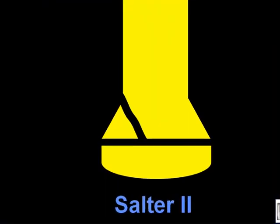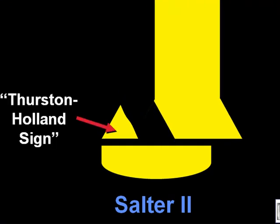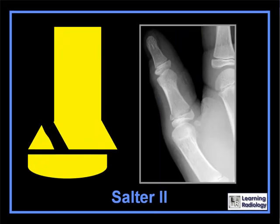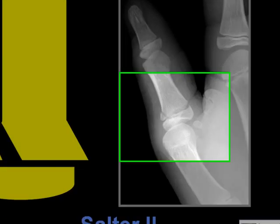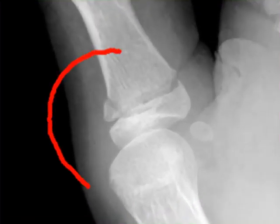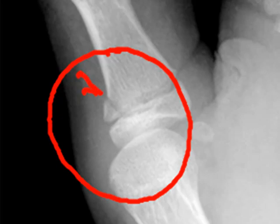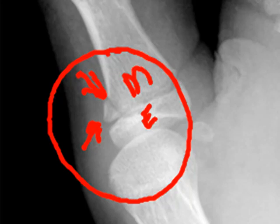A Salter-Harris 2 fracture involves usually a corner of the metaphysis. Very frequently, that corner remains with the epiphyseal plate while the remainder of the metaphysis is displaced. The corner is sometimes called the corner sign, and it is also called the Thurston-Holland sign. Here's an example of a Salter-Harris 2 fracture of the proximal phalanx of the thumb. You can see that there is a fracture line that separates a tiny fragment from the remainder of the metaphysis. We can't see the fracture through the growth plate itself, but there is a fracture through the epiphyseal plate.